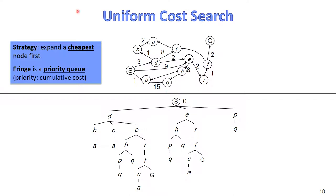In Uniform Cost Search, we will expand the cheapest node first. By cheapest, we mean cheapest in terms of cost — the cost going from the start state to that node. The next state to be expanded is the state that has the least cost so far, reached from the start state with the least cost among all states currently in the fringe.